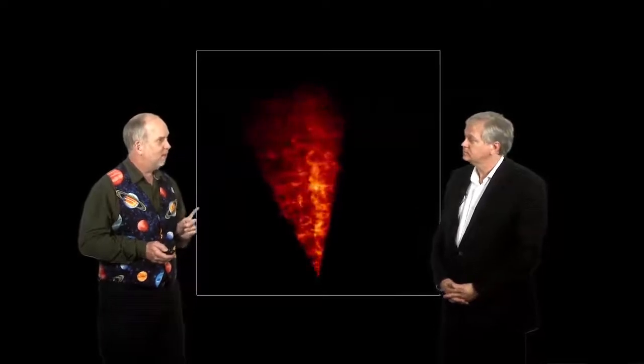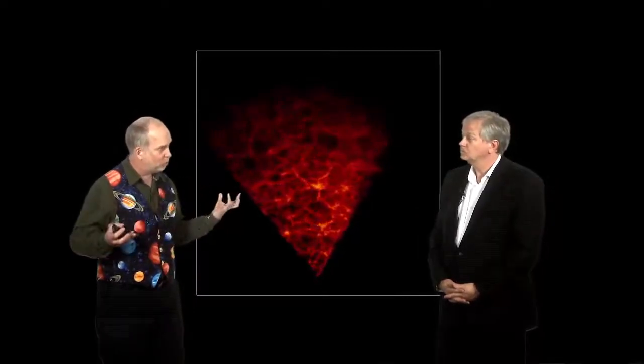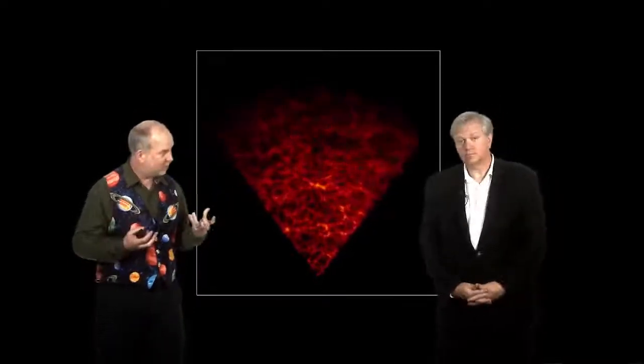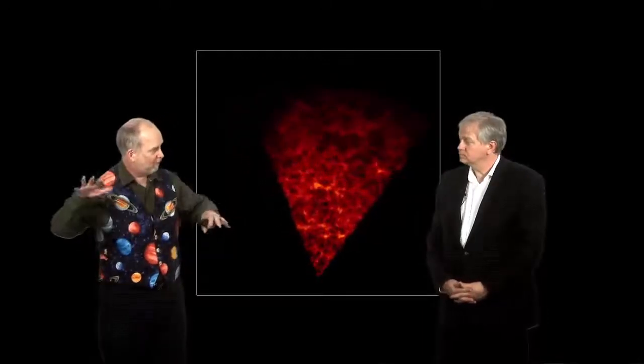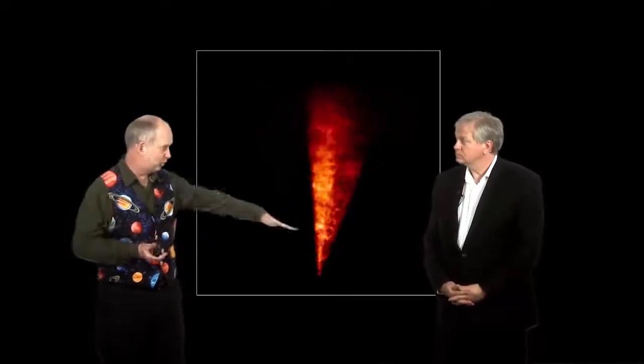Before we give this a big tick, it does predict that there should be fluctuations. It says they come from quantum mechanics and it predicts the relative amount of big and small ones should be the same, but the amplitude is completely arbitrary.